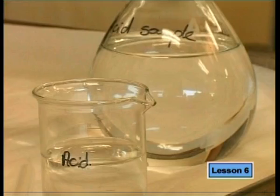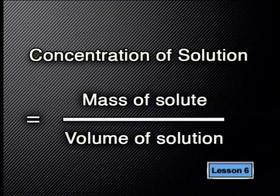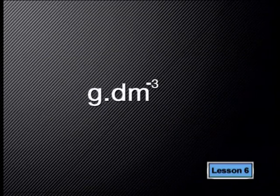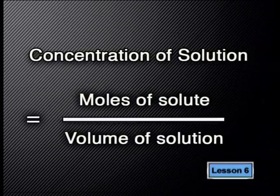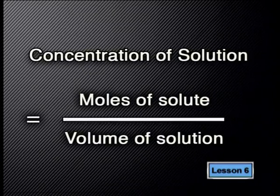In order to describe this more precisely, we need to be able to calculate the concentration of a solution. There are two ways of expressing the concentration of a solution. One way is to measure the number of grams of solute divided by the volume of the solution, and express the concentration in grams per decimetre cubed. The second way is to work out the number of moles of solute, divide it by the volume of the solution, and express the concentration in moles per decimetre cubed.